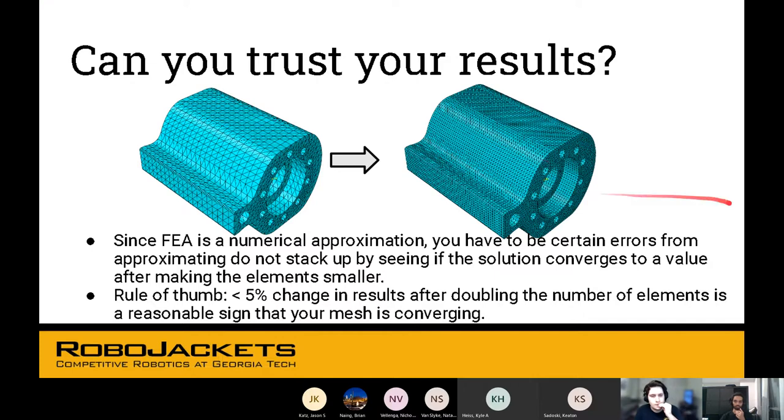As a rule of thumb, you should probably make sure that your results do not change more than 5% after doubling the number of elements. That's a reasonable sign that your mesh is converging. If you're still unsure, you can keep doubling the number of elements. Just keep in mind that the more elements there are, the more computation time it takes.